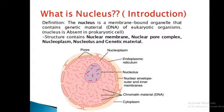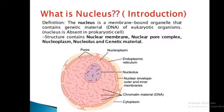What is nucleus? Definition. Nucleus is the membrane-bound organelle that contains genetic material, that is DNA or chromosomes, of eukaryotic organisms. Nucleus is absent in prokaryotic cells. The structure contains nuclear membrane, nuclear pore complex, nucleoplasm, nucleolus, and genetic material.